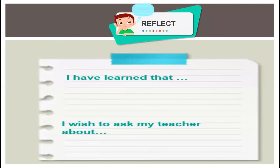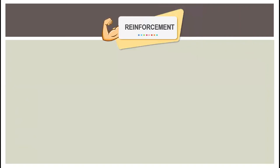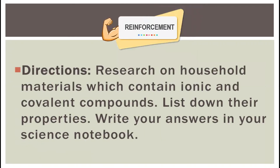Try to reflect on what you have learned from this video lesson: 'I have learned that...' and 'I wish to ask my teacher about...' Don't forget to submit your answer to your science teacher. To strengthen the ideas you have learned, please do research on household materials which contain ionic and covalent compounds. List down their properties and write your answers in your science notebook or answer sheet.